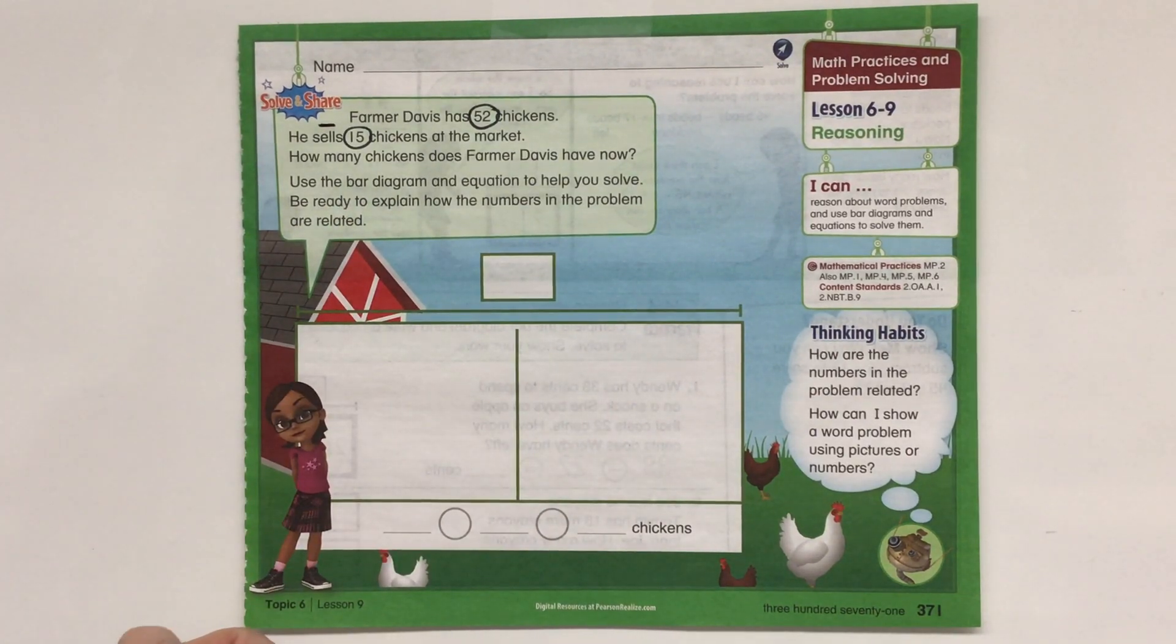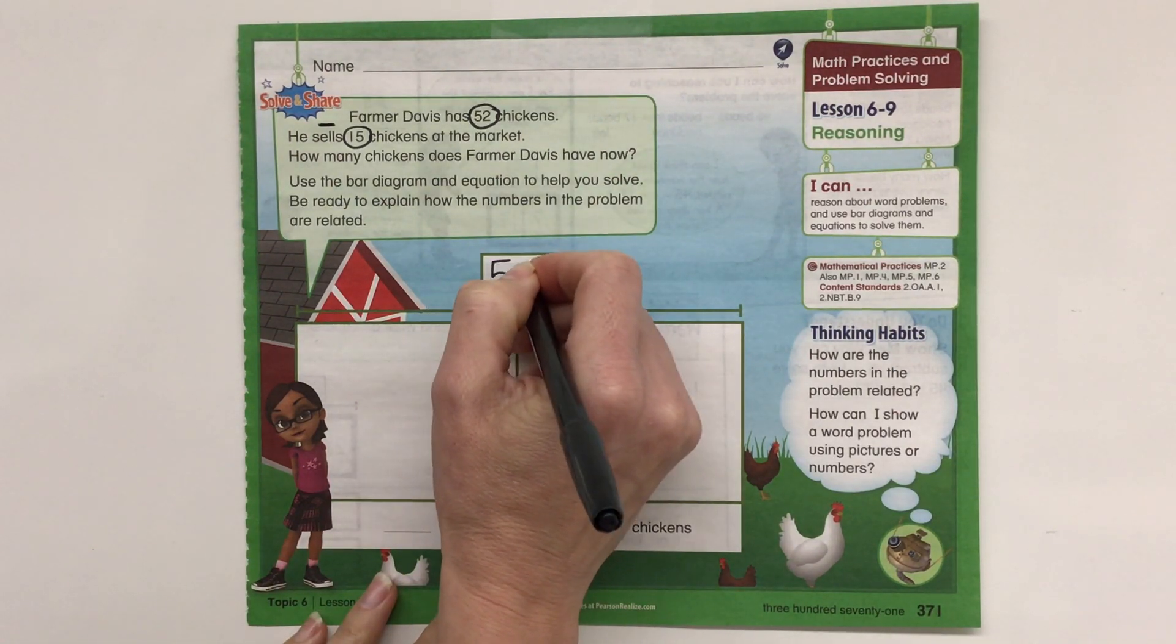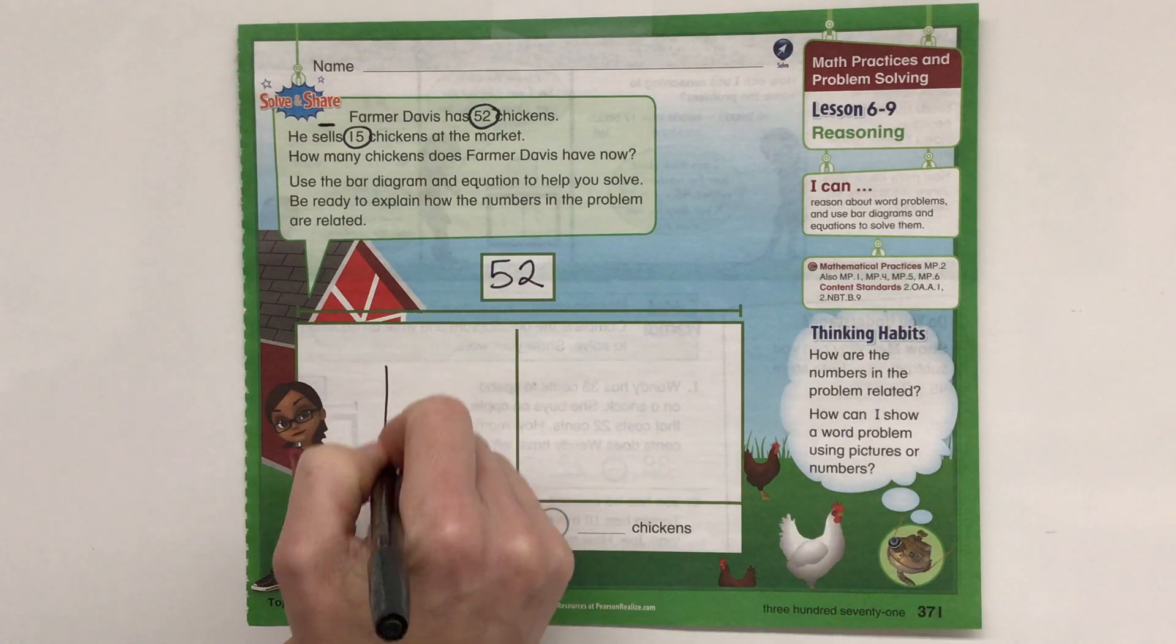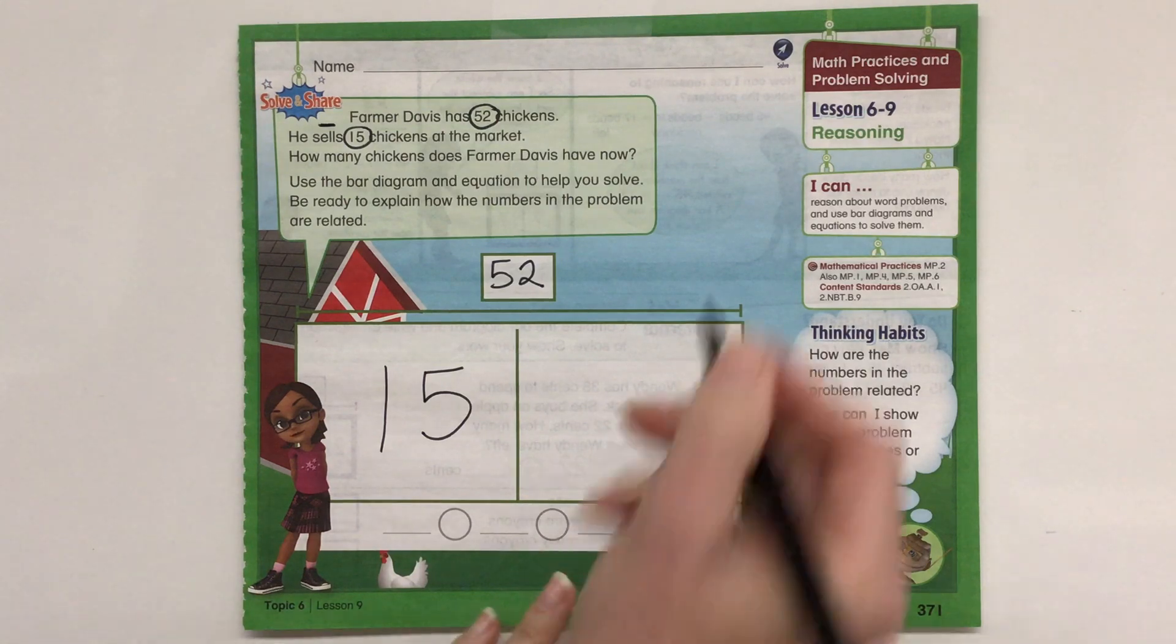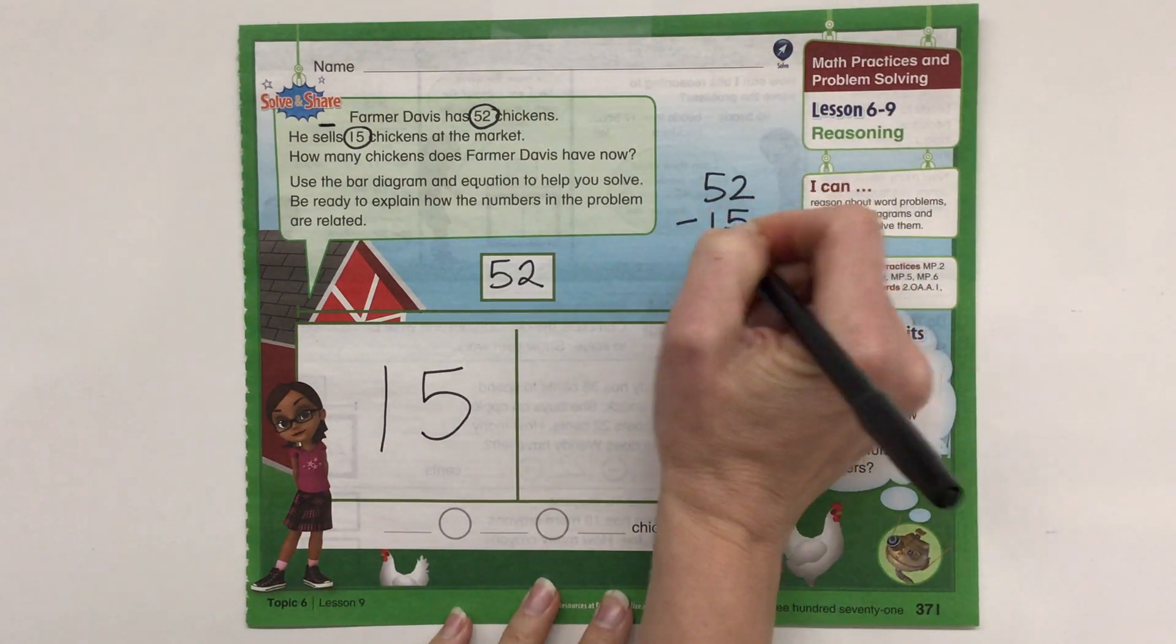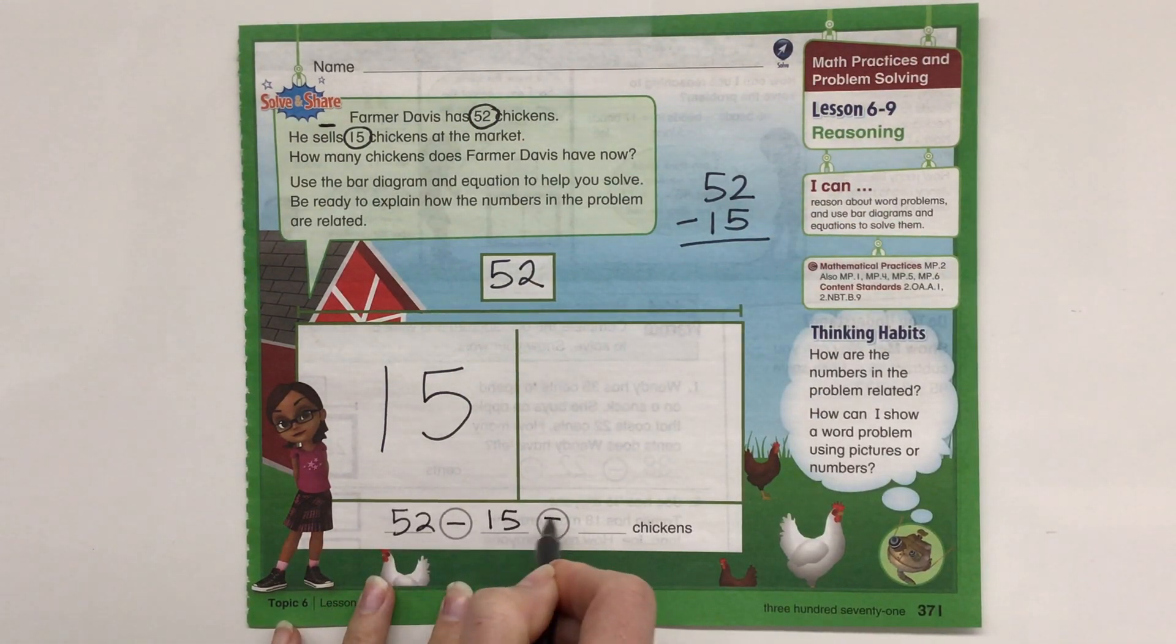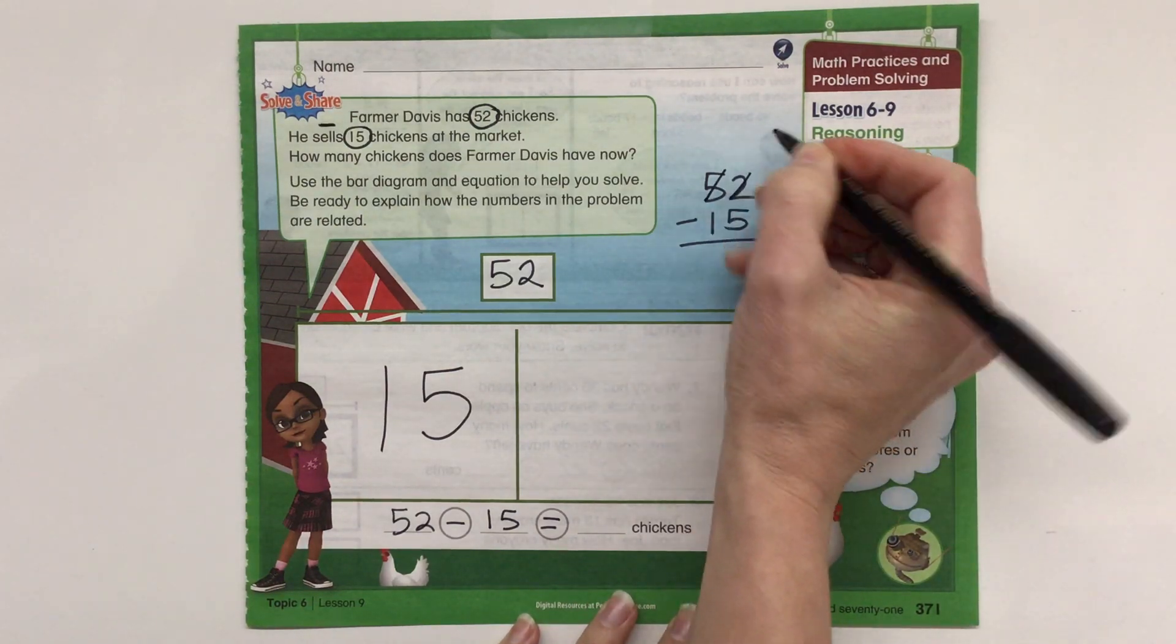Be ready to explain how the numbers in the problem are related. So he had a total of 52 chickens, and he sells 15 of them at the market. Let's see how many chickens he has left now. So 52 minus 15 is our equation. So 52 minus 15 equals, 2 minus 5 that won't work, so we have to regroup.